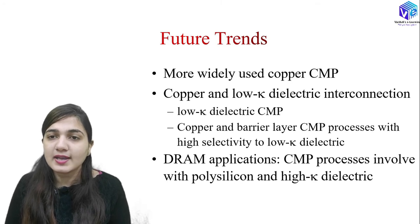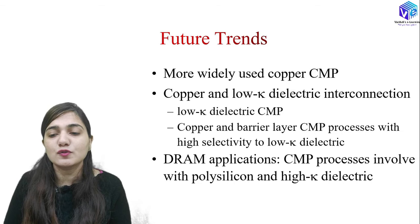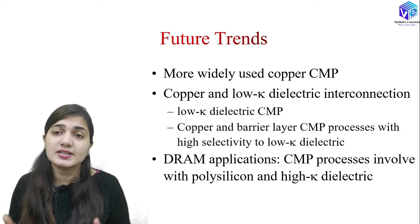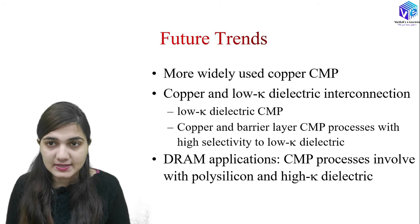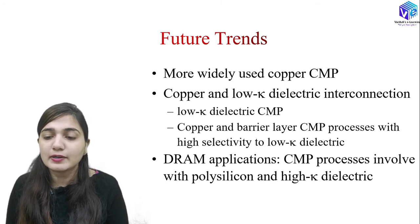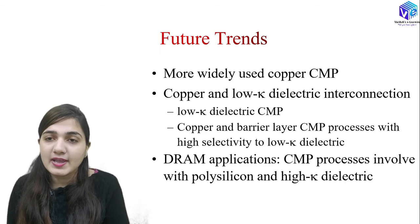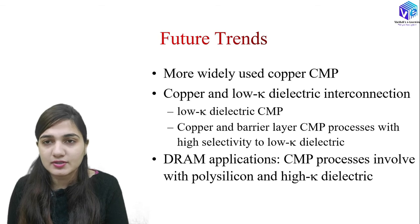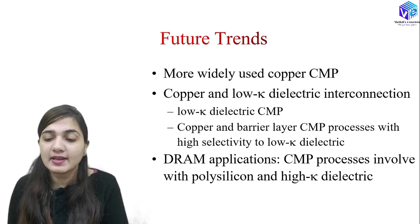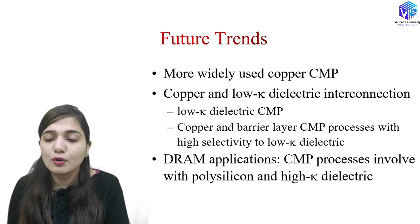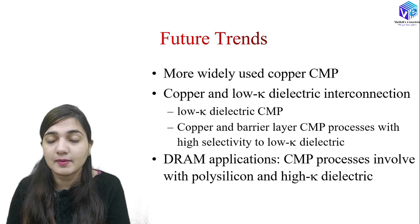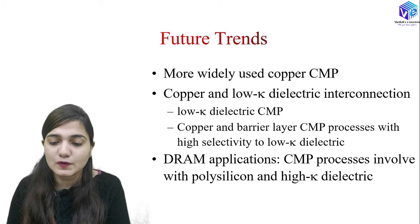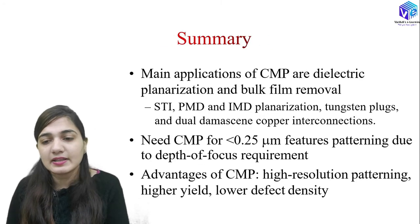Coming to future trends: as metallization moves toward copper, copper CMP becomes an inherent step and is the most widely used CMP today. Copper and low dielectric constant interconnection will be available in the future, and copper and barrier layer CMP processes with high selectivity to low dielectric constant materials will be implemented. For DRAM applications, CMP processes involving polysilicon and high dielectric materials will also take place in the future.